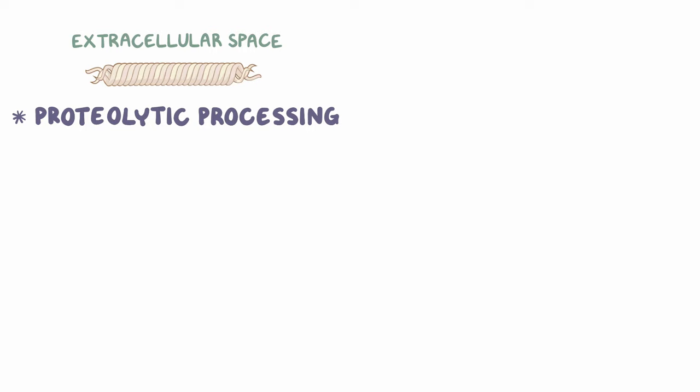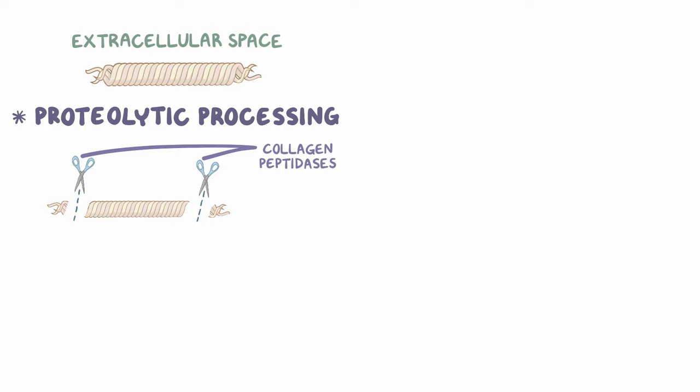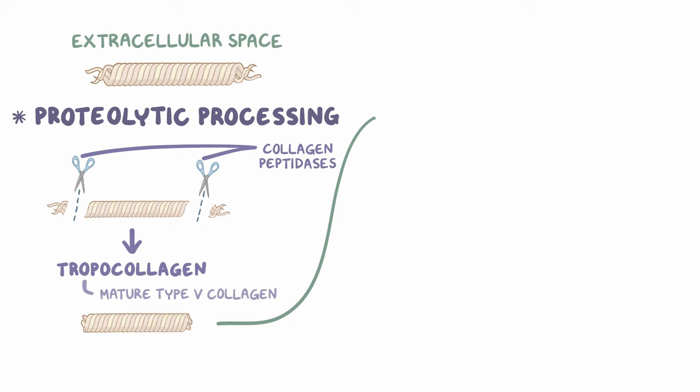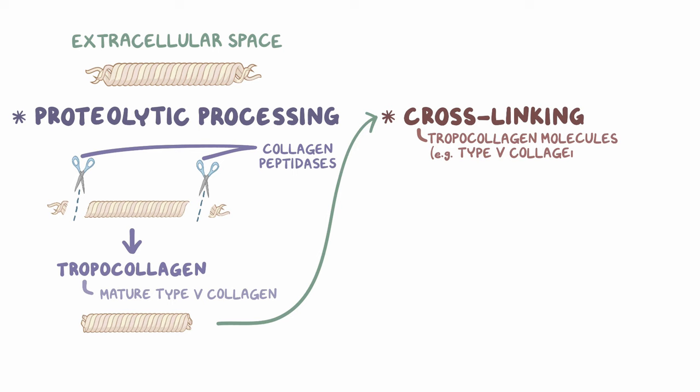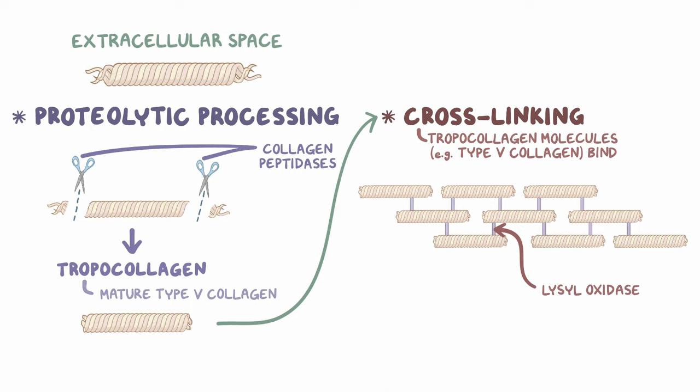The procollagen is then put in a vesicle by the Golgi apparatus and sent into the extracellular space. In the extracellular space, procollagen undergoes proteolytic processing, where a set of enzymes called collagen peptidases cleave the loose strands at both ends of the procollagen protein, turning procollagen into tropocollagen. At this stage, tropocollagen is the mature type 5 collagen. Finally, there's a stage called crosslinking, where lots of tropocollagen molecules bind together with the help of a copper-dependent enzyme called lysyl oxidase to form a stack of collagen fibrils with type 1 collagen.